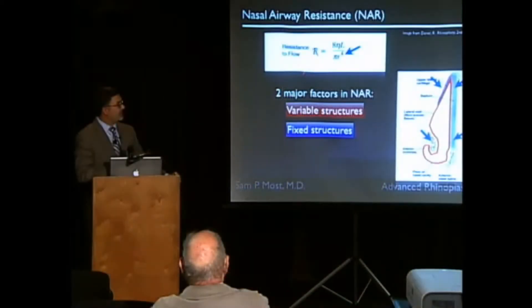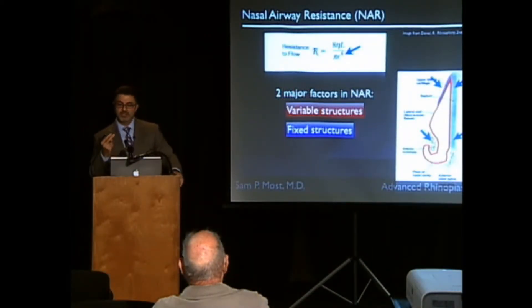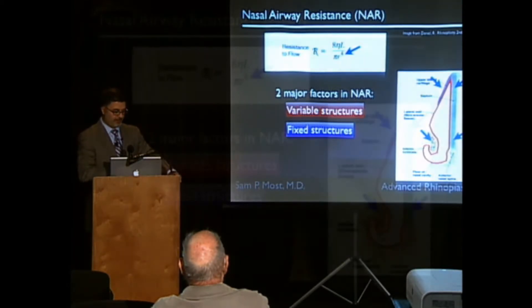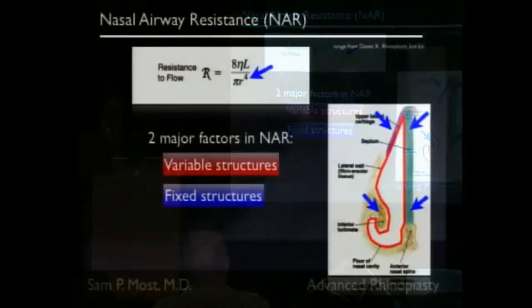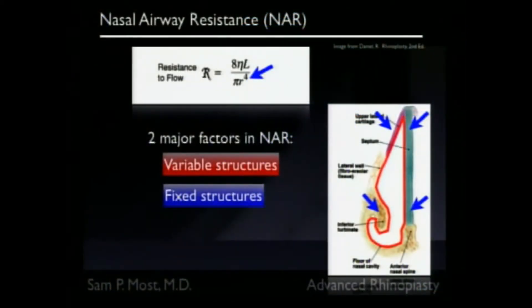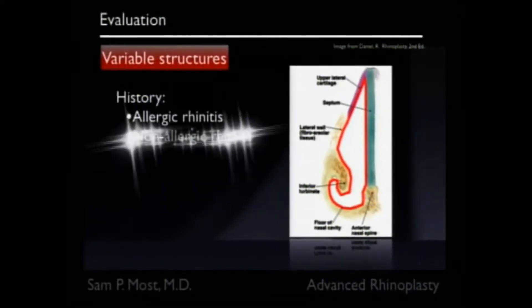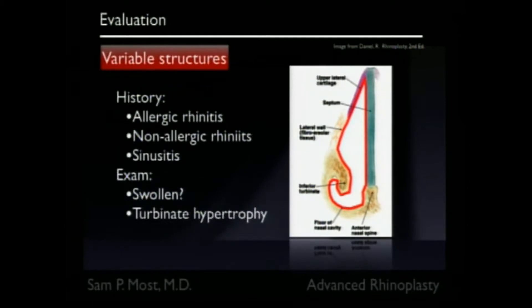Keeping this in mind, there are two major categories of nasal obstruction: the variable structures and the fixed structures of the nose. The variable structures are essentially related to the lining of the nose. We talked about the bone and the cartilage inside the nose — there's actually a lining of mucosa, outlined here in red.